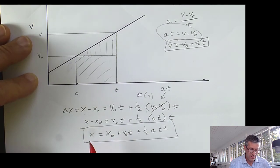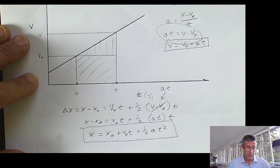So notice what this has in it. This has final position, initial position, initial velocity, acceleration, and time, but it doesn't have final velocity. So if I have a problem set where I don't need to know and I don't care about final velocity, this is the equation that I want to use.